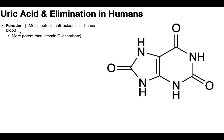In most organisms, vitamin C or ascorbate is the most potent antioxidant in the blood. However, in humans, a nice adaptation is that we have higher levels of uric acid than most other organisms, and that uric acid can act as a scavenger of free radicals and antioxidants. So it's actually good to have some amount of this in the blood — it's more potent than vitamin C.